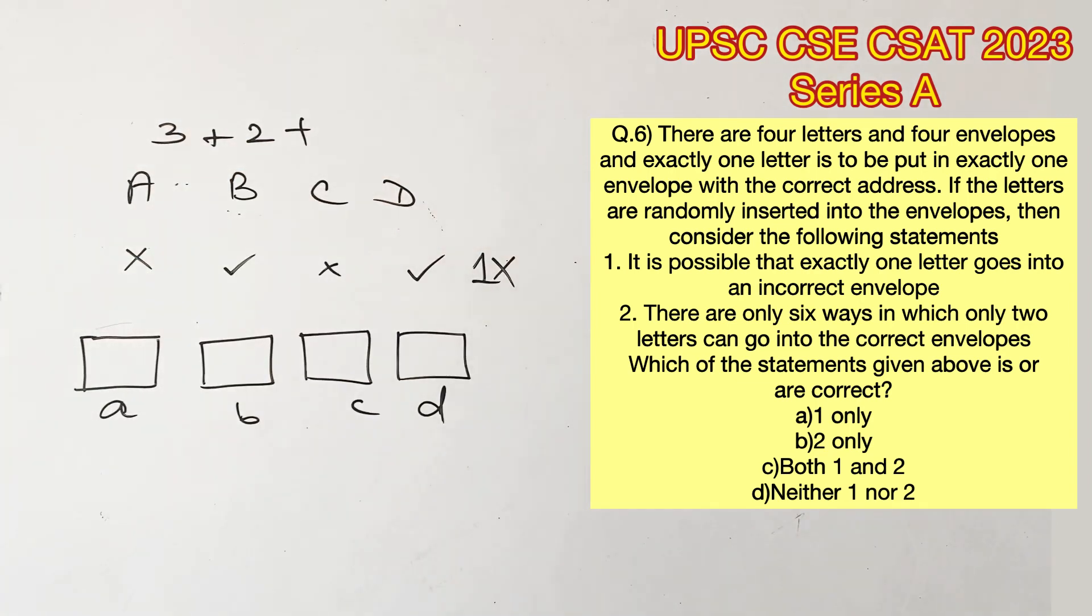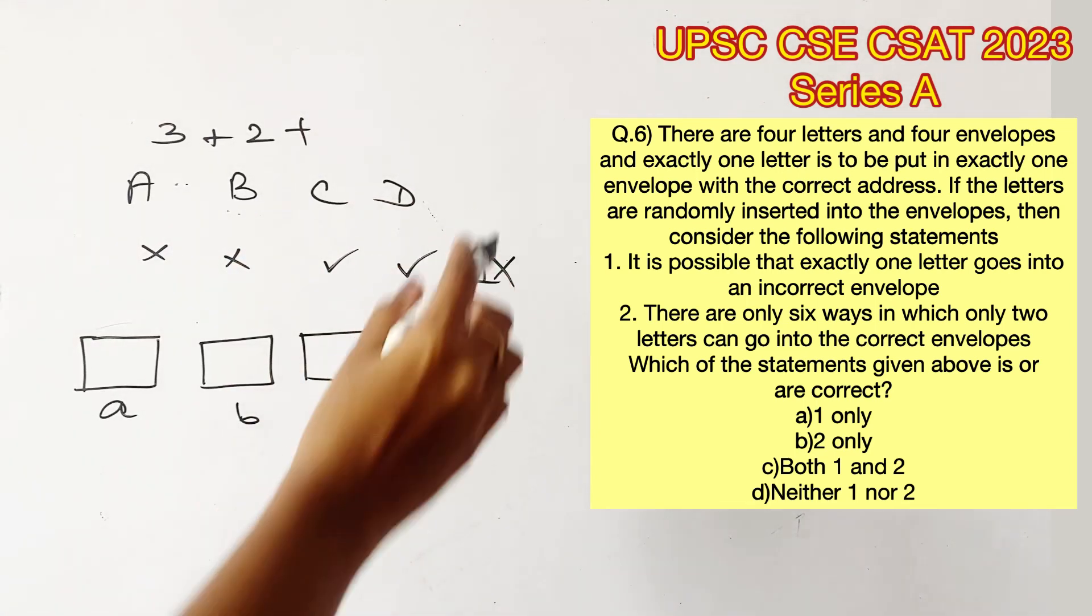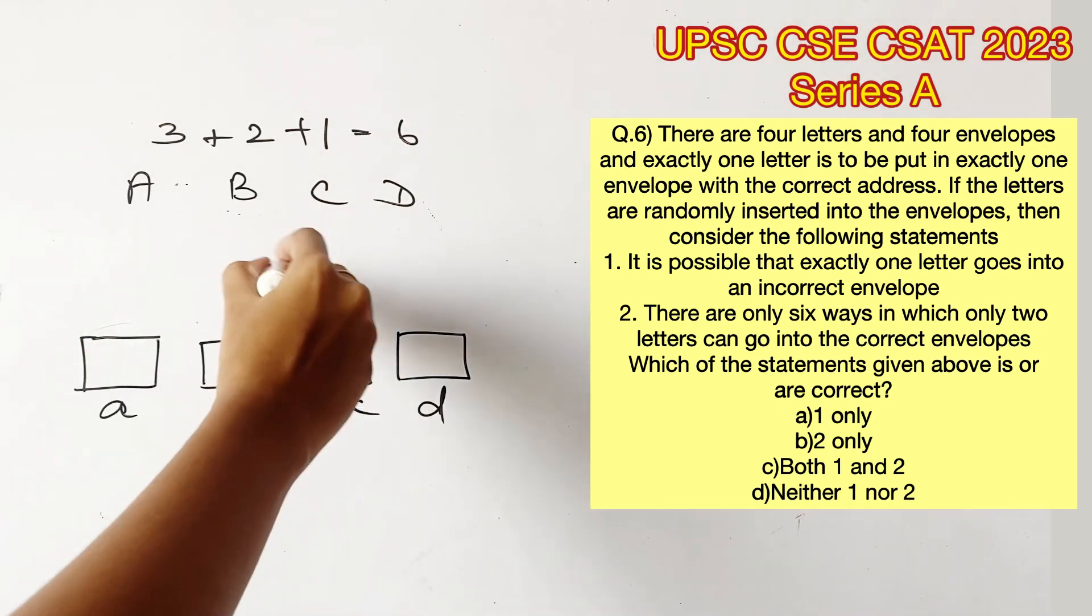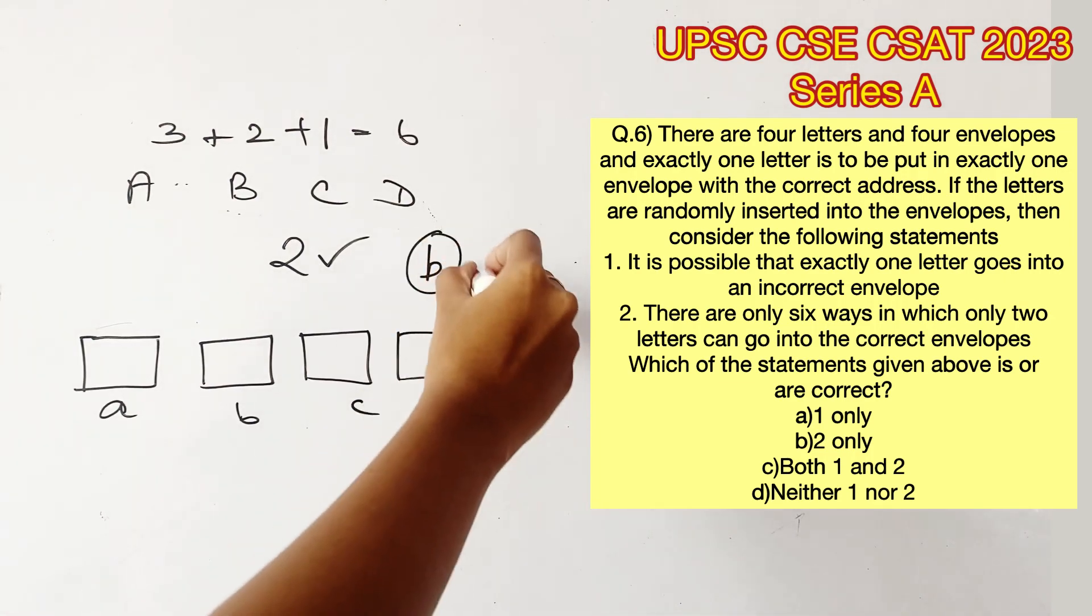Then the last possibility will be C and D are correct and A and B are wrong. Therefore, that is one possibility. Adding all these up, we get six possibilities. So statement 2 is right. Therefore, option B is the right answer.